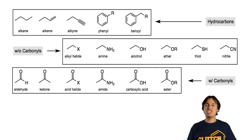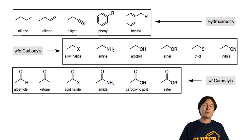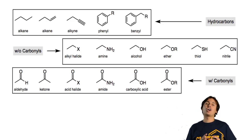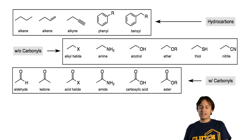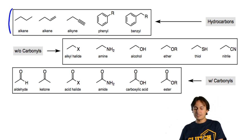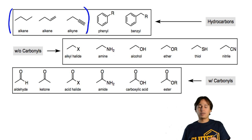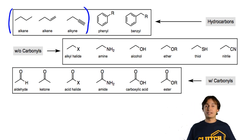Here's your functional group cheat sheet. Remember that carbon-carbon single bonds, double bonds, and triple bonds are known as alkanes, alkenes, and alkynes respectively.